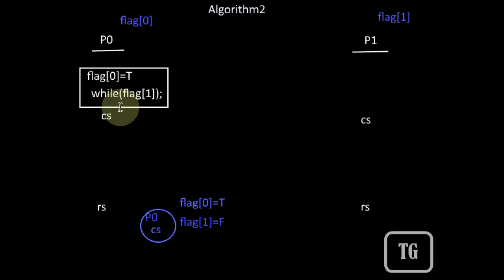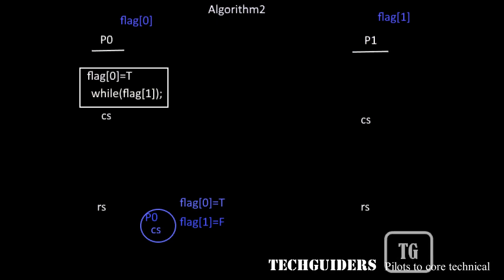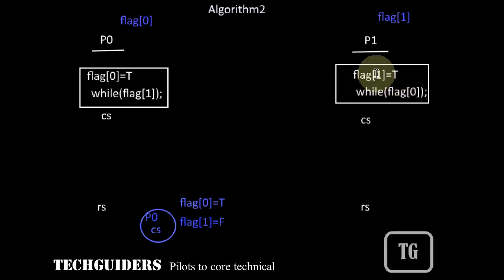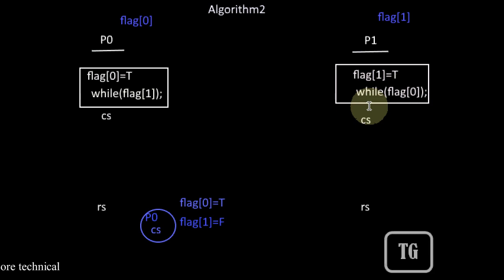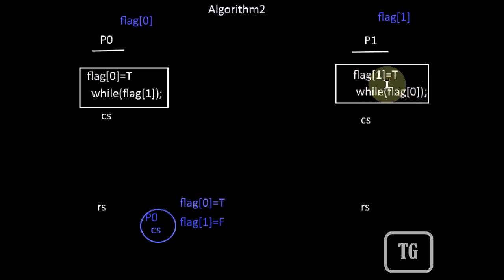While P0 is inside the critical section, suppose a preemption occurs and P0 loses the processor. P1 gains the processor, completes its reminder section, and then wishes to enter the critical section. It will set its flag to true, but before entering the critical section, P1 will keep on checking the value of flag[0]. Since P0 is inside the critical section, flag[0] will be true, so P1 will keep waiting in the while loop without entering.